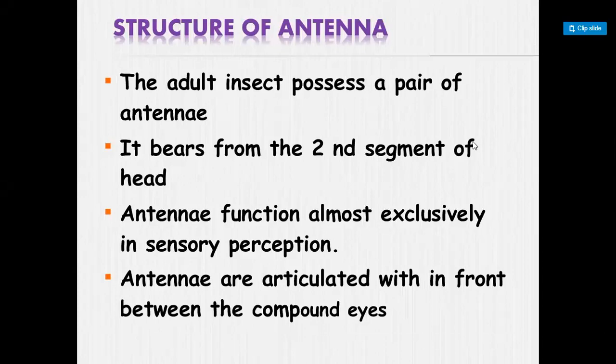Good afternoon to all students. Today our lecture is about the structure of antenna. In insect morphology, the insect body is divided into three parts: head, thorax, and abdomen. The antenna is a part of the head structure. Adult insects possess a pair of antenna — in any insect like housefly, honeybee, yellow wasp, butterflies, and moths, a pair of antenna are present.